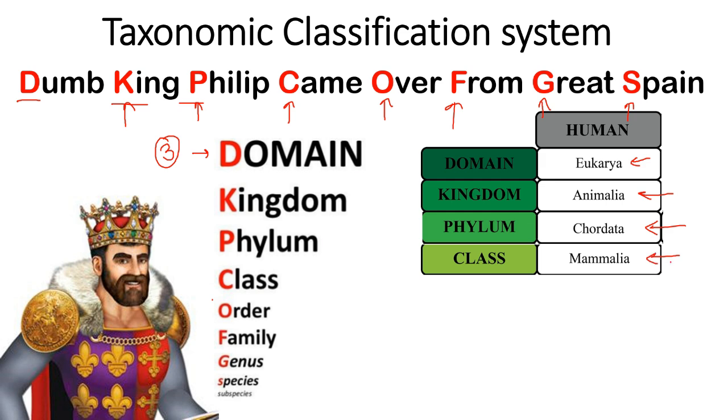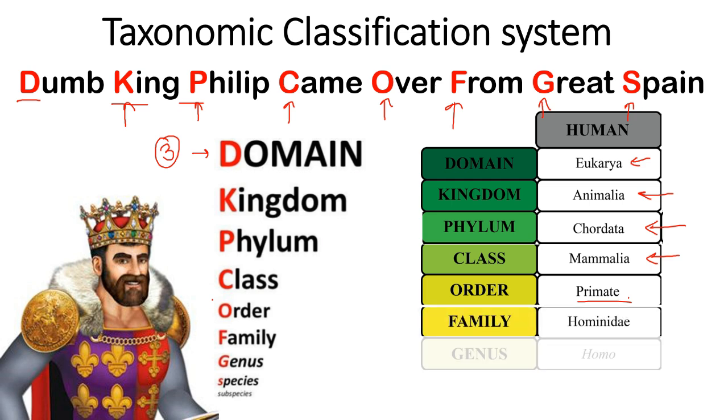The Order for us is Primates. There are many more primates we know, but humans are specific, so let's break it down. The Family we are from is Hominidae. Break it down further: the Genus is Homo, and the Species is sapiens.